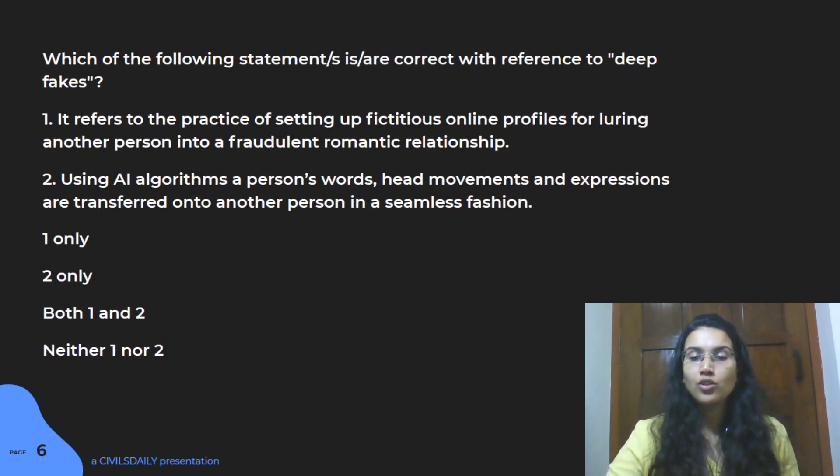Let's move on to the last question of the day. Again, it's related to computer science, it talks about deep fakes. This term was in current affairs, so you should be aware what it means. The first statement is that it refers to the practice of setting up a fictitious online profile for luring another person into fraudulent romantic relationships. Number two is using artificial intelligence algorithms on a person's words, head movements, and expressions, and they are transferred to another person in a seamless fashion.